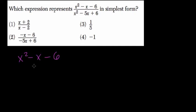In the numerator we have x squared minus x minus 6. To factor that, we find factors of negative 6, the last term, that add up to the coefficient of the second term, negative 1.